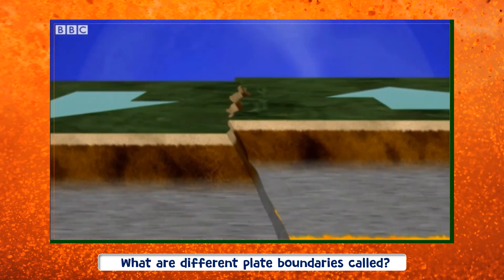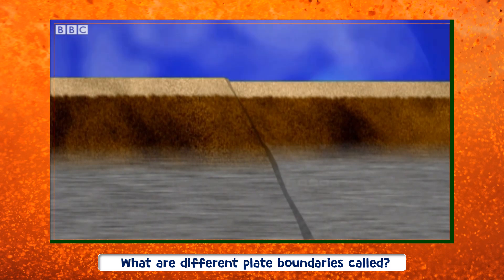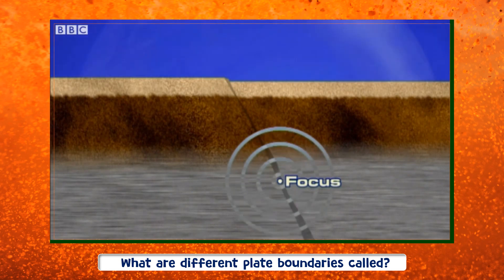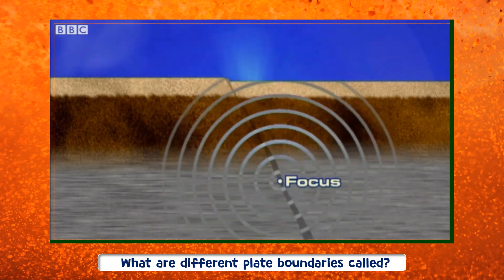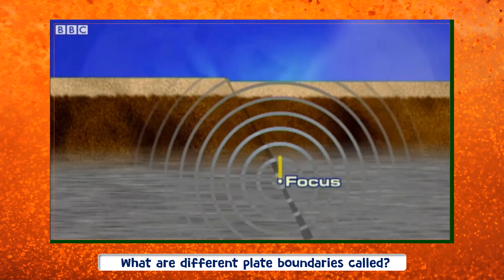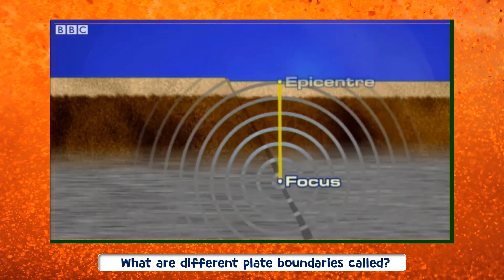Any one of these movements can attack weak points in the crust, creating large cracks or faults. The point where the crust begins to crack is called the focus, and is the heart of an earthquake. The release of all that stored up energy pumps out seismic or shock waves in every direction. On the surface, directly above the focus, is the epicentre, and this receives the worst effects of the waves.